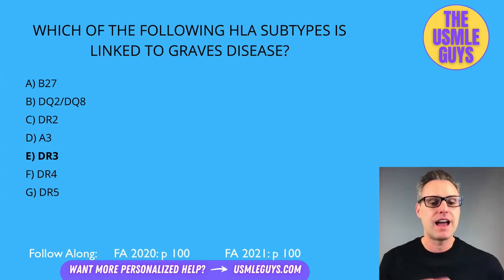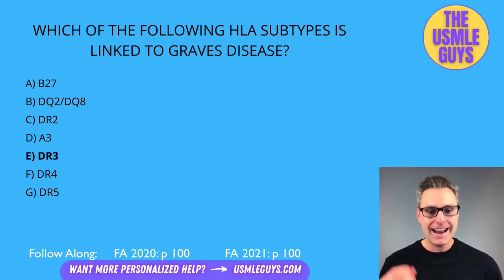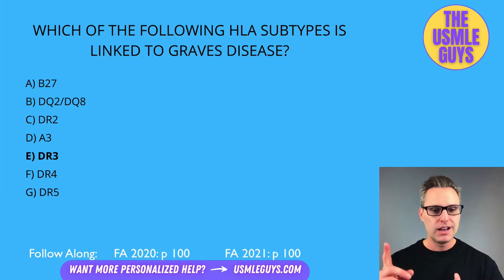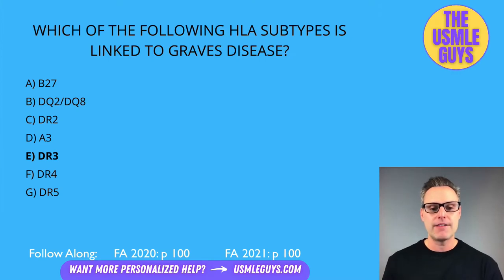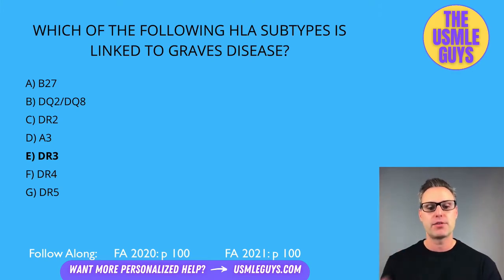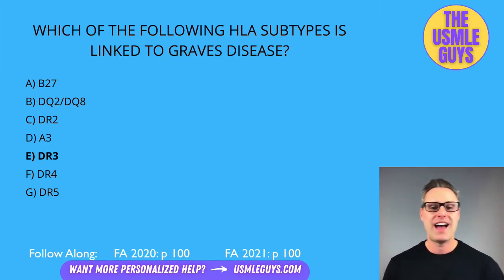DR4 is also associated with type 1 diabetes — so DR3 and DR4 are both associated with DM1. DR4 is additionally associated with RA and Addison disease. DR3 and DR4 are both linked to type 1 diabetes and Addison disease. Finally, DR5 is associated with Hashimoto thyroiditis, which is a similarity it shares with DR3.